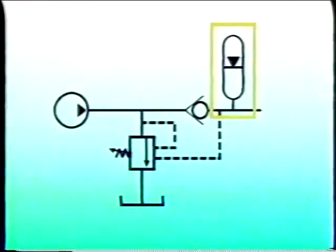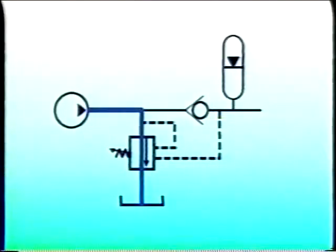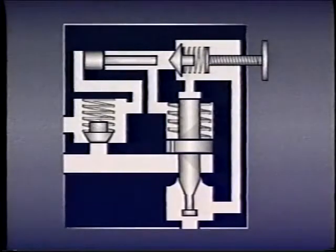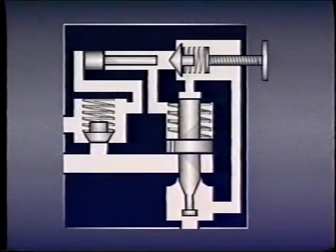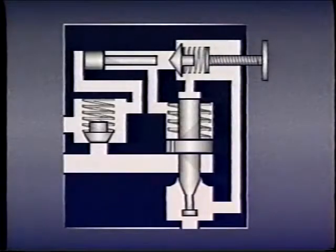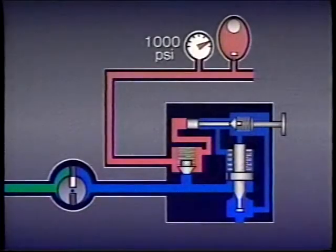Often when an accumulator is fully charged but no work is required of the system for a period of time, the pump is dumped to tank at a low pressure until the accumulator requires recharging. This is called unloading, and it conserves energy and reduces wear on the pump and its motor. One common way of unloading is with a differential unloading relief valve, which is specifically designed for use with accumulators and will automatically divert flow to the accumulator whenever it requires charging, but will unload the pump to tank after the accumulator is charged.